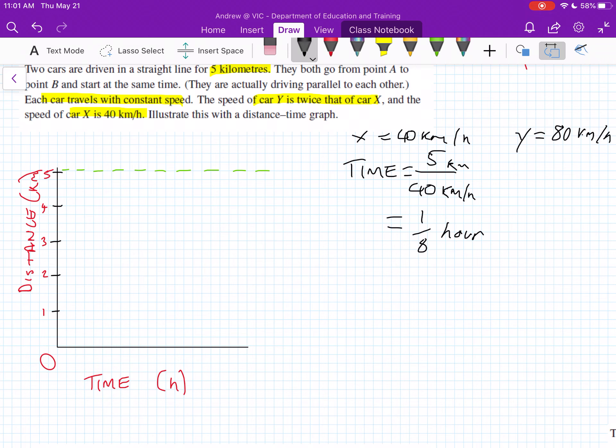Next we'll work out 80 km per hour. If they're going double the speed, hopefully you realize they will take half the time. So this is 5 km over 80 km per hour, which equals 1/16th of an hour.